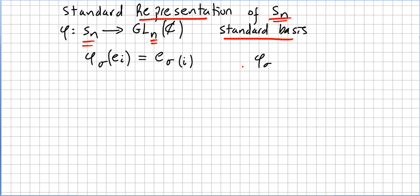One obtains this matrix. At the end of the day, it's just a question of permuting the rows of the identity matrix according to sigma.